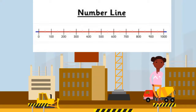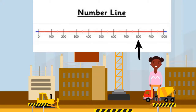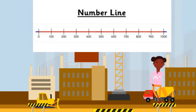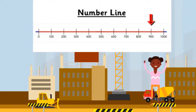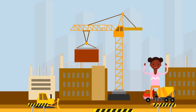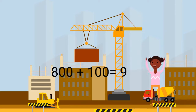Can you find 800 on the number line? What is 100 more than 800? That's right, 100 more than 800 is 900. The construction crew needed 900 bricks.